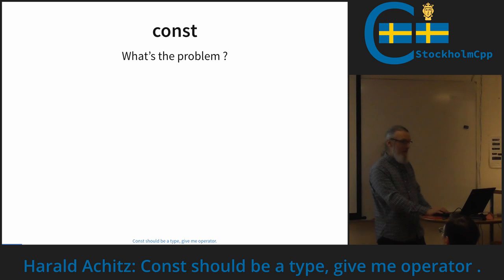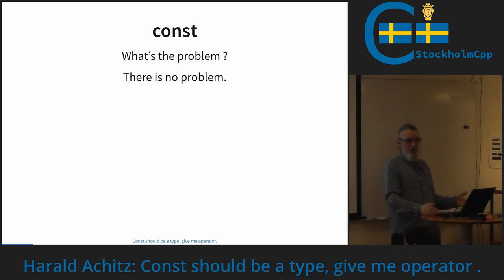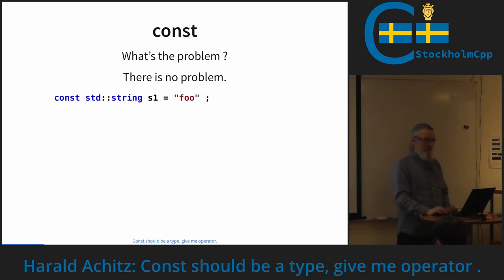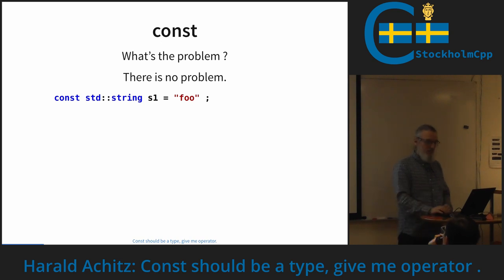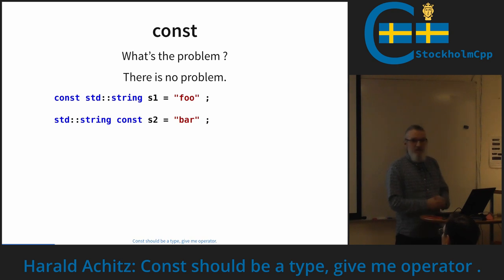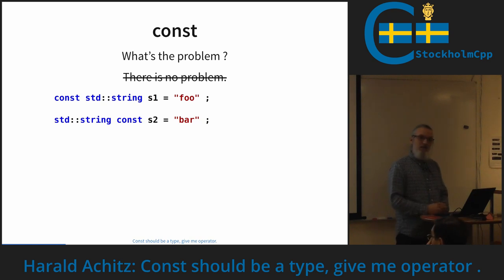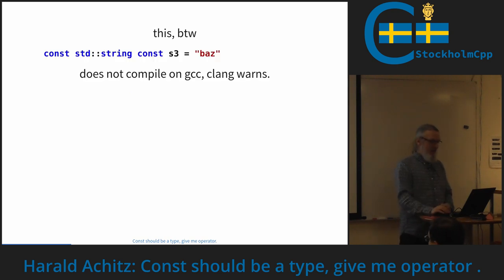So const — what is the problem? Well, there is no problem with const, right? `const std::string` or `std::string` something has a value, and we have a const variable. Sometimes people also like to write it in a different way, so clang-format ended our code formatting stories, and then we introduce something new.